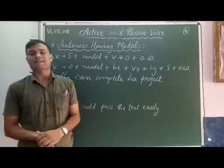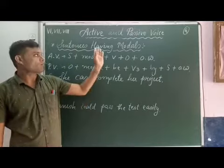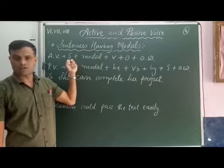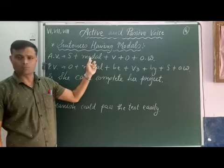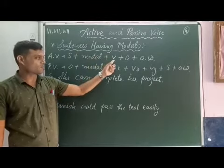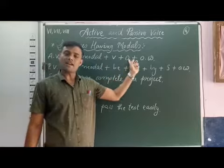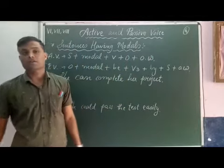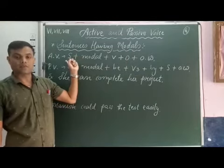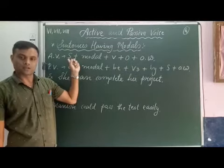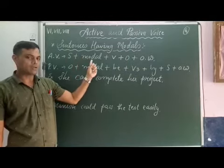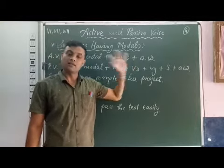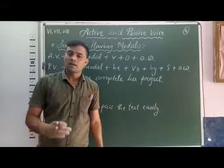The active voice sentence structure having modals is: first subject, then modal, then verb, then object, and then other words. I repeat — active voice sentence structure: subject, modal, verb, object, and other words.